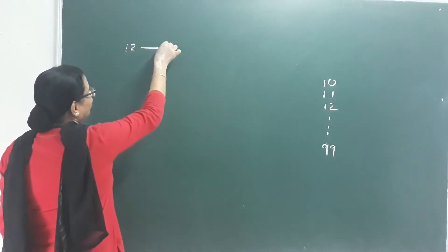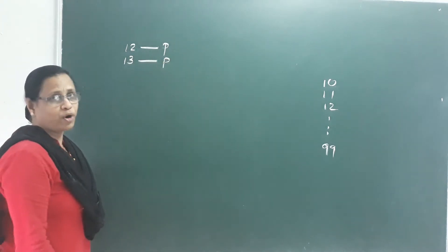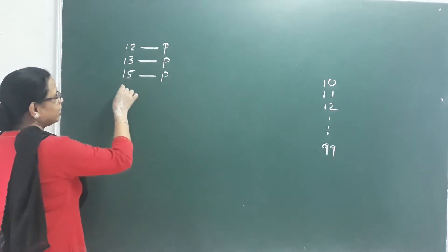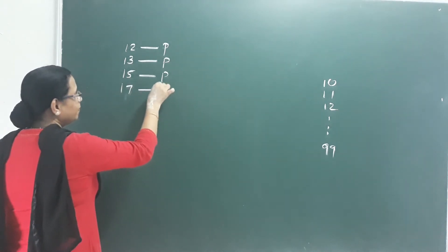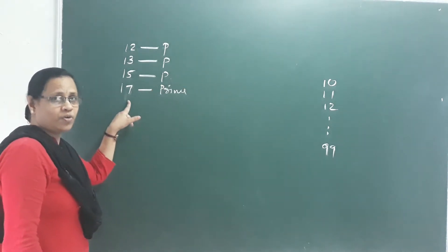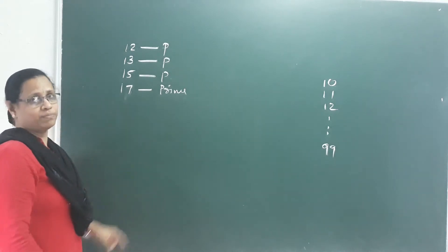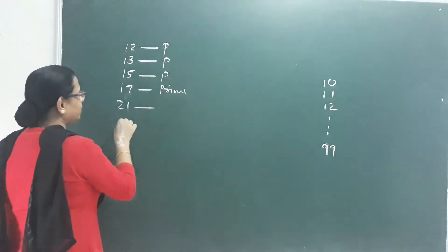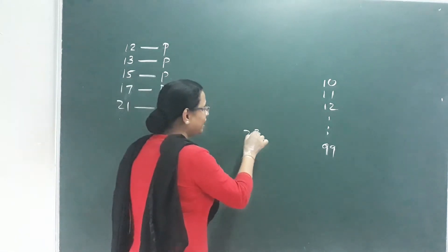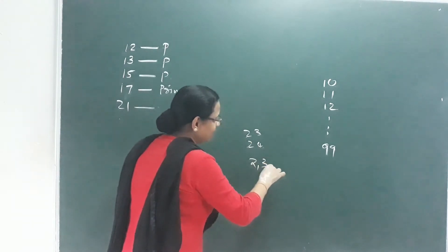Take 12: digit product is 1×2 = 2, which is prime. Take 14: product is 1×4 = 4, not prime. Take 15: product is 1×5 = 5, prime. Take 16: product is 1×6 = 6, not prime. Take 17: product is 1×7 = 7, prime. Take 21: product is 2×1 = 2, prime. Take 22, 23 — product is 2×3 = 6, and 24.